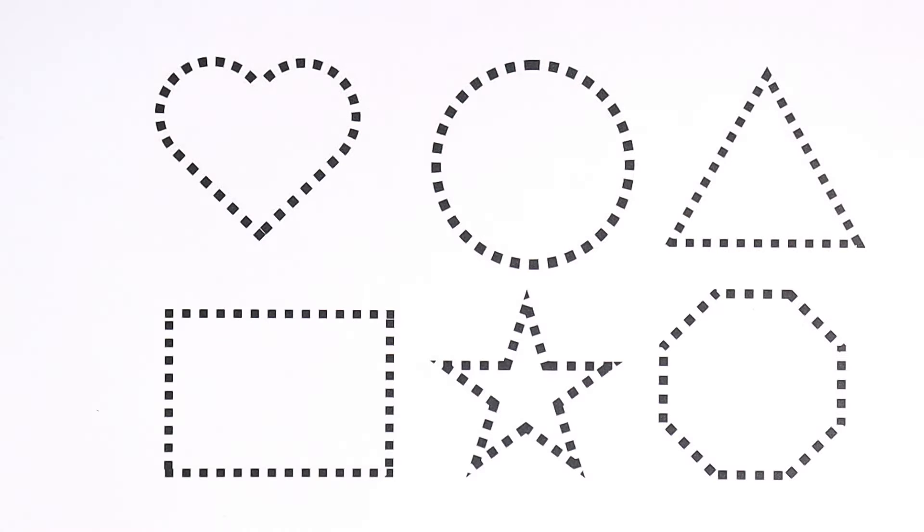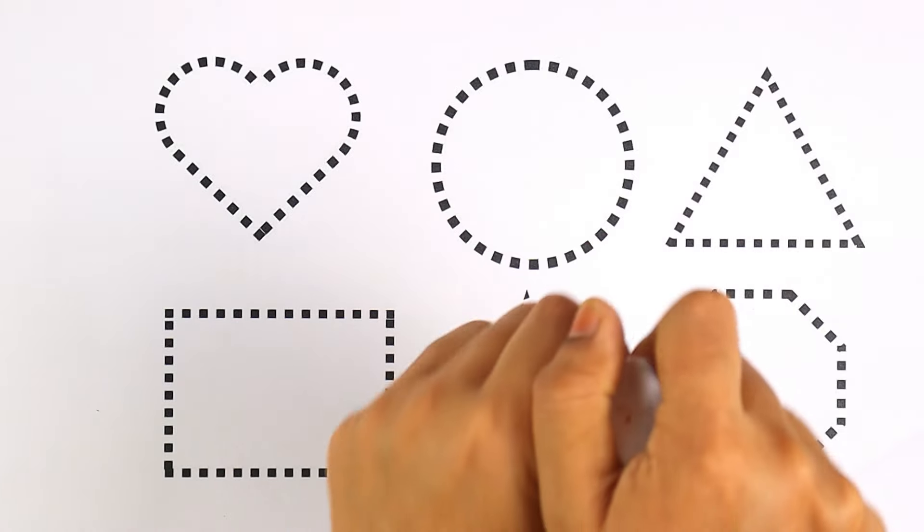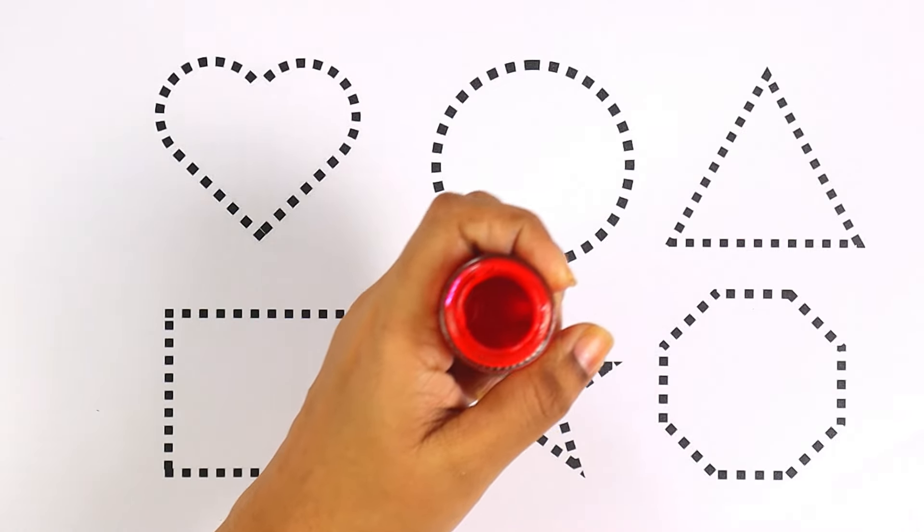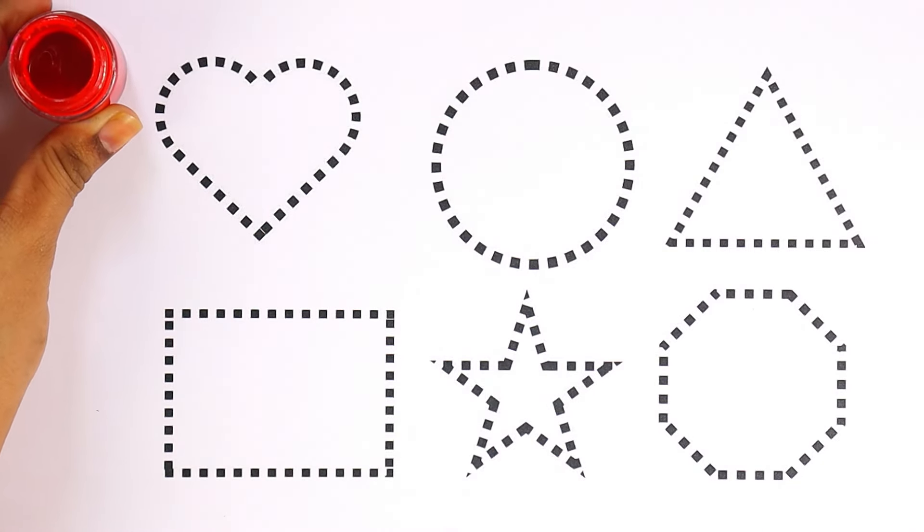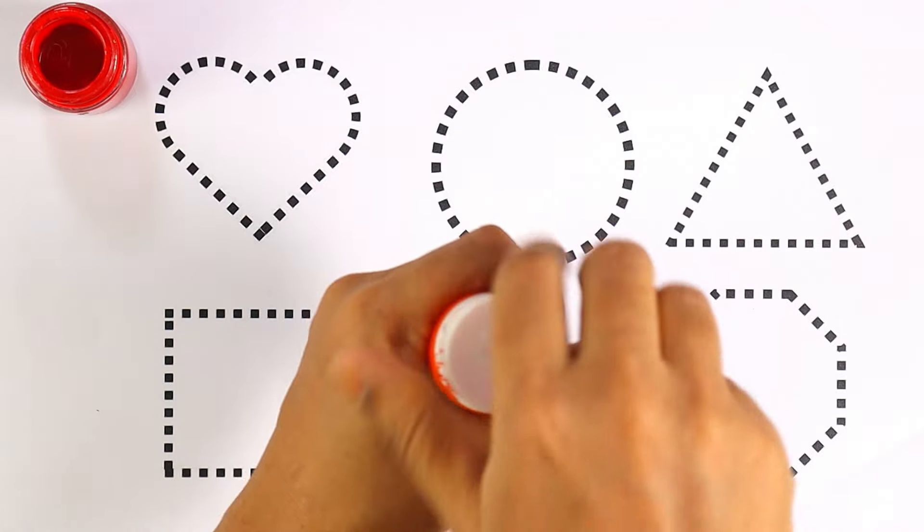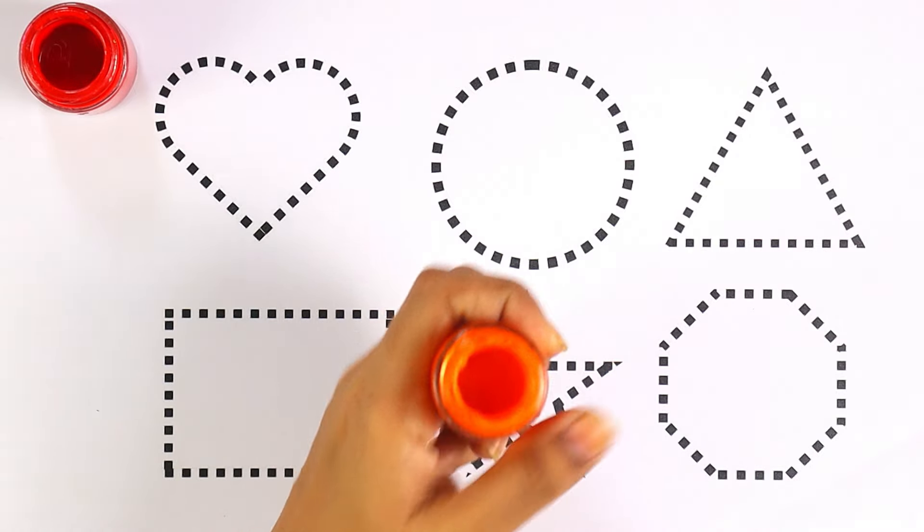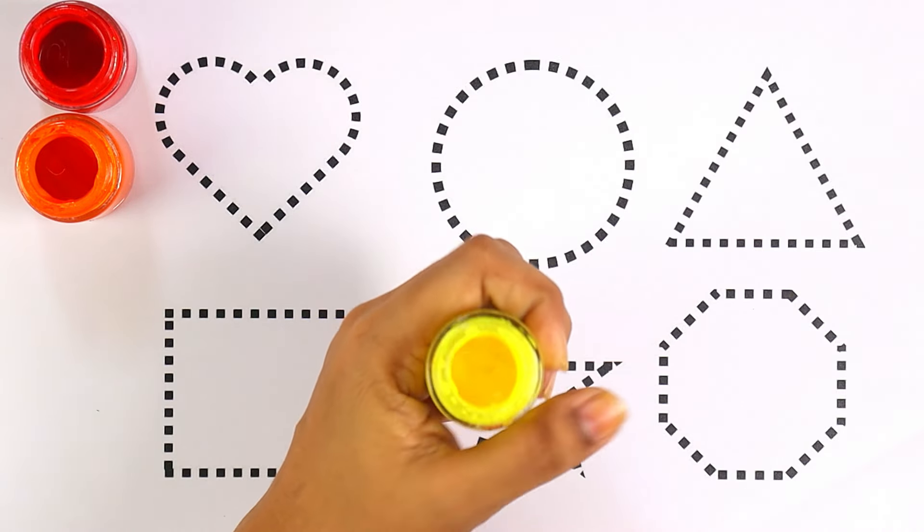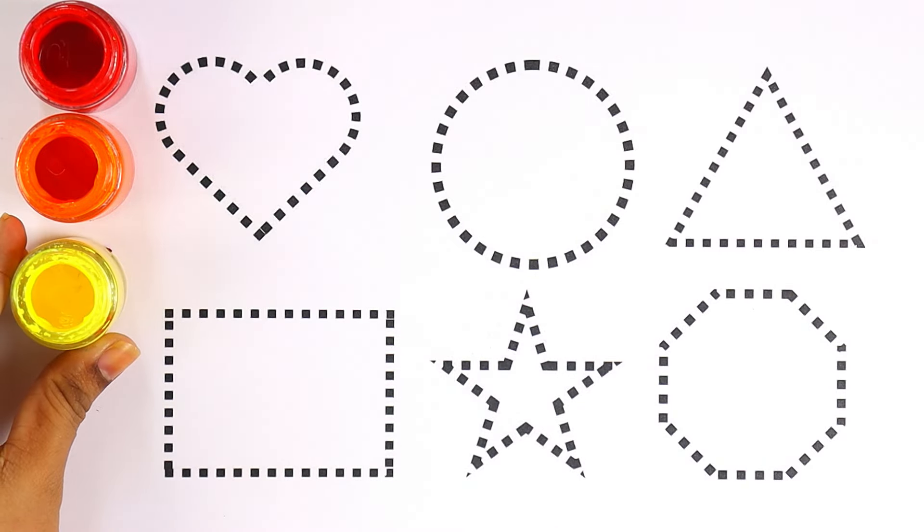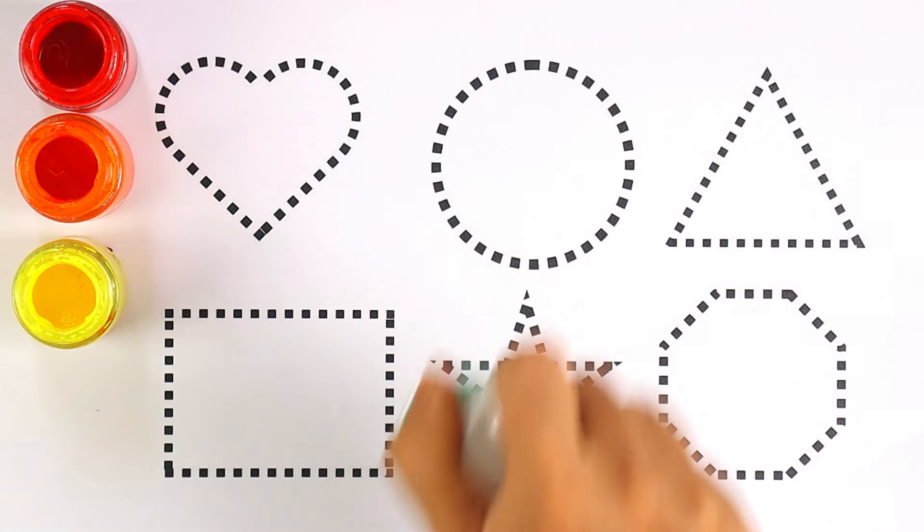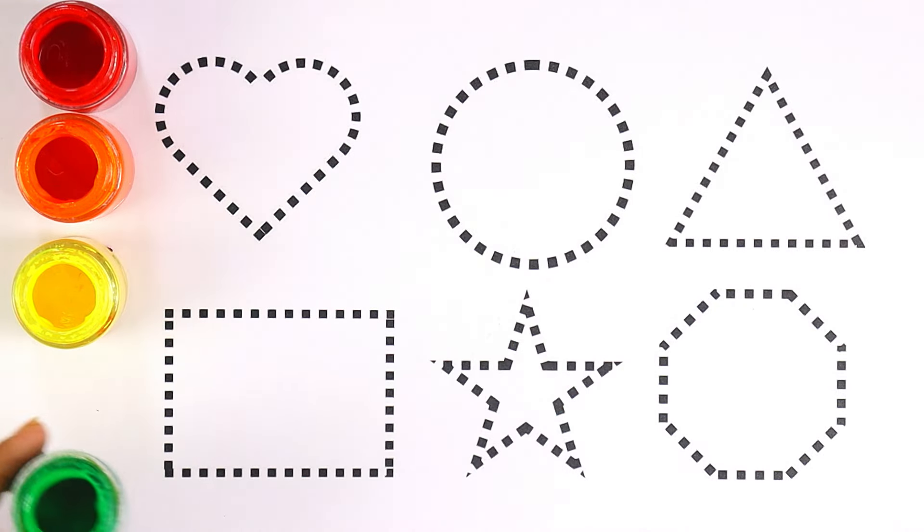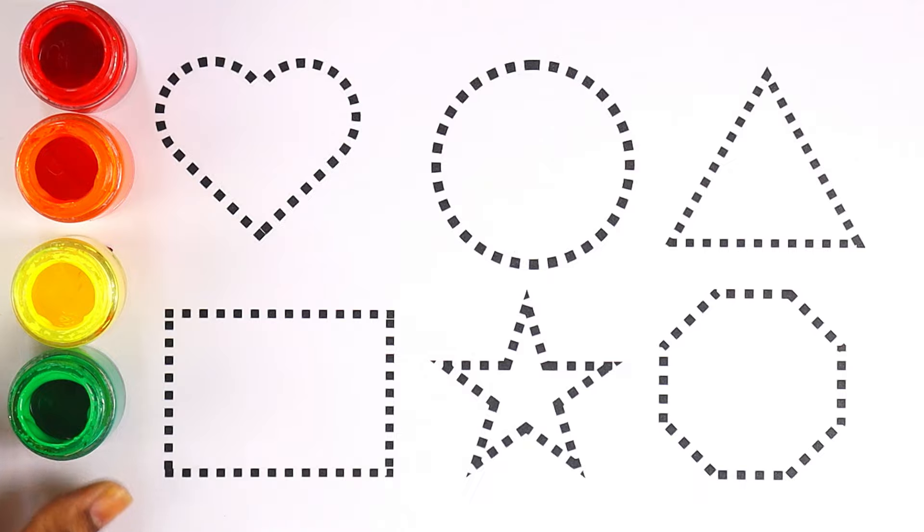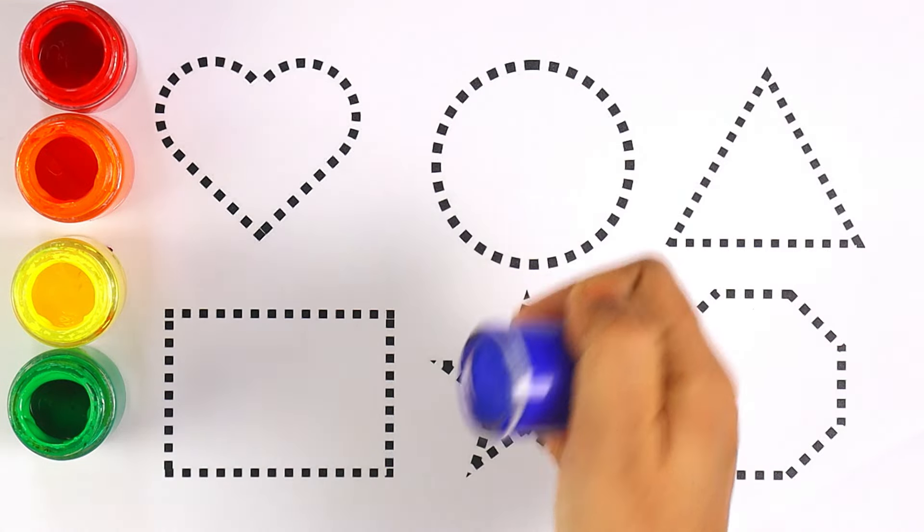Hello kids, welcome to my channel. Today let's learn how to draw shapes. Now let's start with colors: red color, orange color, yellow color, green color, and the last one is blue color.